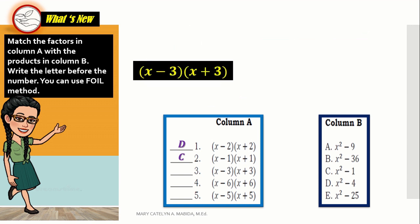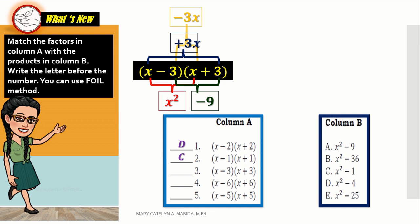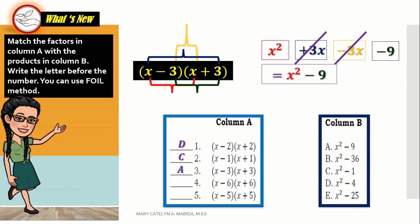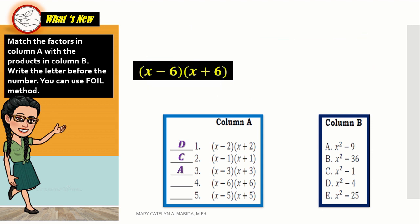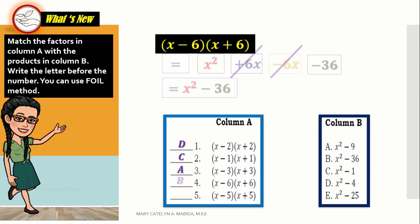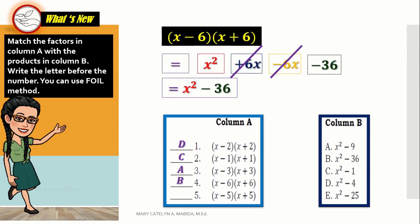Let's go to number 3: the difference and the sum of x and 3. Using the FOIL method, x times x is x squared. x times 3 is 3x. Negative 3 times x is negative 3x. And negative 3 times 3 is negative 9. Combining like terms, the answer is letter A. Let's go to number 4: the difference and the sum of x and 6. Combining like terms, the answer is letter B, x squared minus 36.